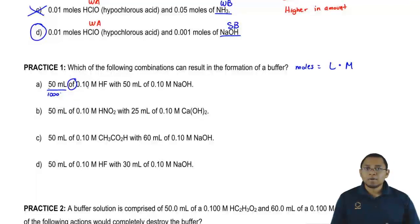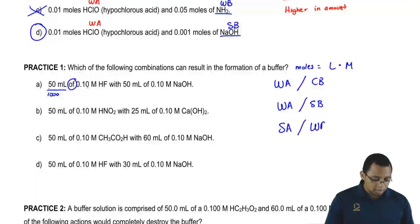And remember the three combinations that can result in the formation of a buffer. So check for each one of these. Look to see do you have a weak acid and conjugate base, do you have a weak acid and strong base, or do you have a strong acid and weak base. Look for these combinations. If you don't see them, don't bother doing the math. So I would recommend looking at each compound first and seeing if they match up with any of these combinations.